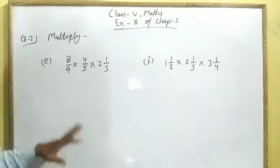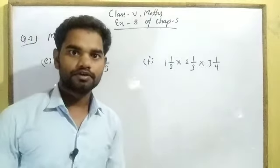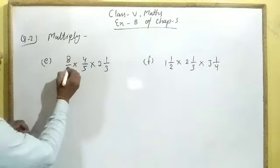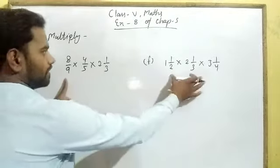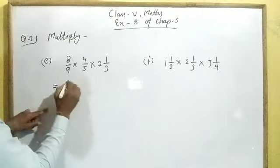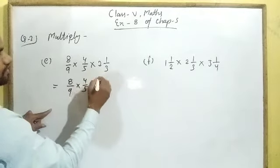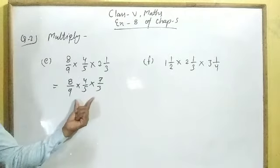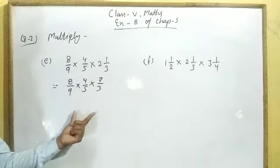Question number 2 — simply multiply. Parts E and F are given; remaining 4 parts you will solve by yourself. Part E: 8 upon 9 multiplied by 4 upon 5 multiplied by 2 whole 1 upon 3. First of all, convert the mixed fraction to improper: 3 × 2 is 6, plus 1 is 7 upon 3. So we have 8 upon 9 × 4 upon 5 × 7 upon 3. Now check if any numbers can be cancelled — no common factors found. So multiply: 8 × 4 × 7 in the numerator, and 9 × 5 × 3 in the denominator.